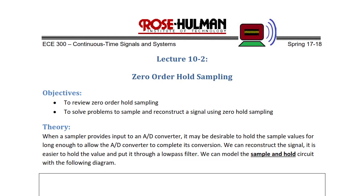When a sampler provides input to an A-to-D converter, it may be desirable to hold the sample values long enough to allow the A-to-D converter to complete its conversion. We can reconstruct the signal, and it is easier to hold the value and put it through a low-pass filter.